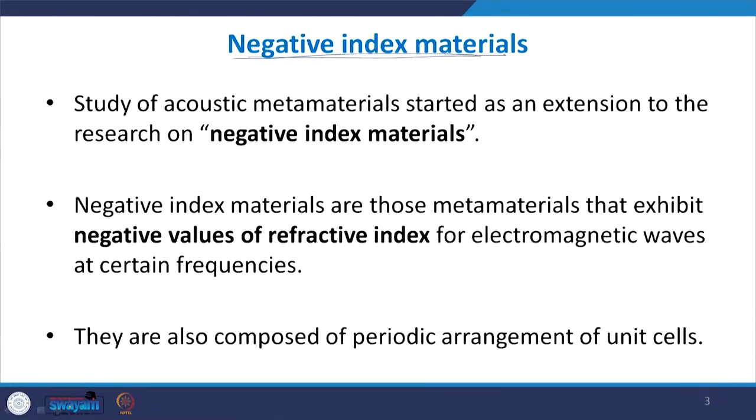The history of metamaterials began with the invention of negative index materials. Acoustic metamaterials came first from metamaterials discovered in the domain of electromagnetic waves. These negative index materials were a type of material used to manipulate electromagnetic waves — those metamaterials that exhibit negative values of refractive index for electromagnetic waves at certain frequencies.